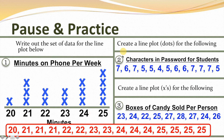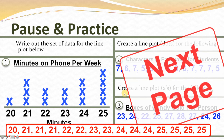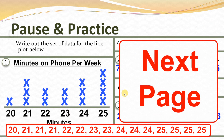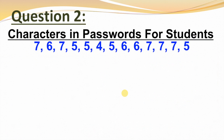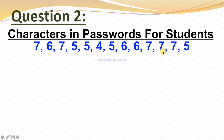For numbers two and three, we're going to need to check that out on the next page. So for question two, we were talking about the characters in passwords for students. Here's our data, and the first thing we should always do is put our data in order from least to greatest. And it'll look like this. Then we'll just follow our step-by-step process.